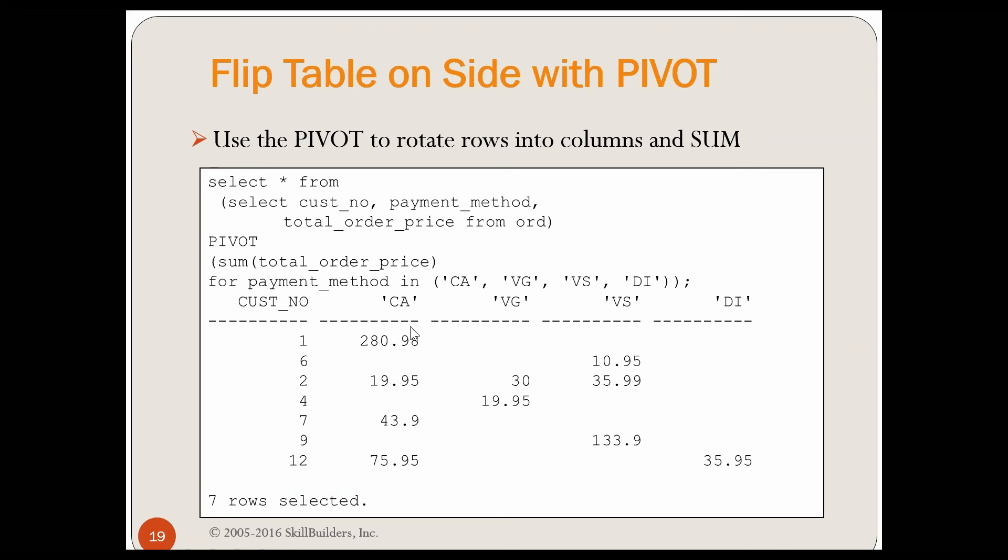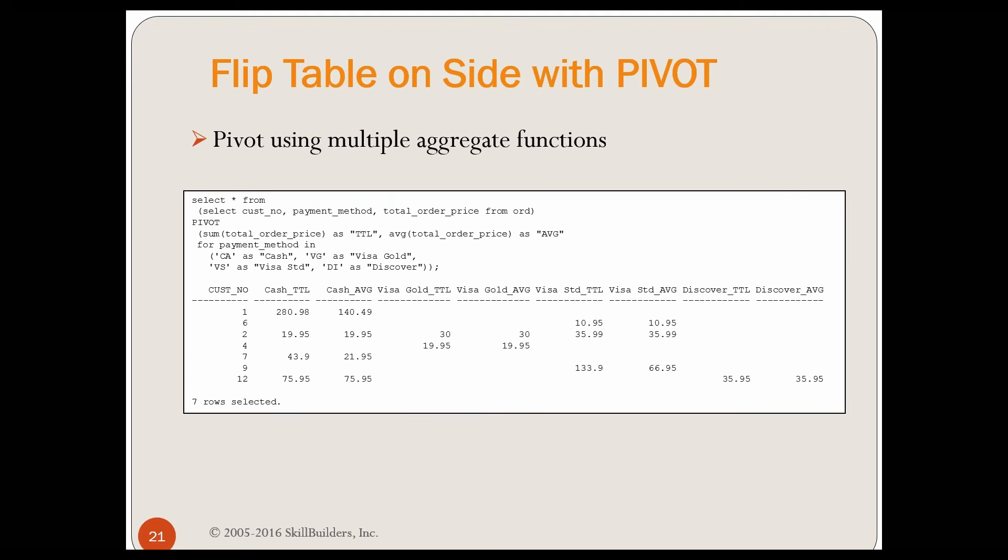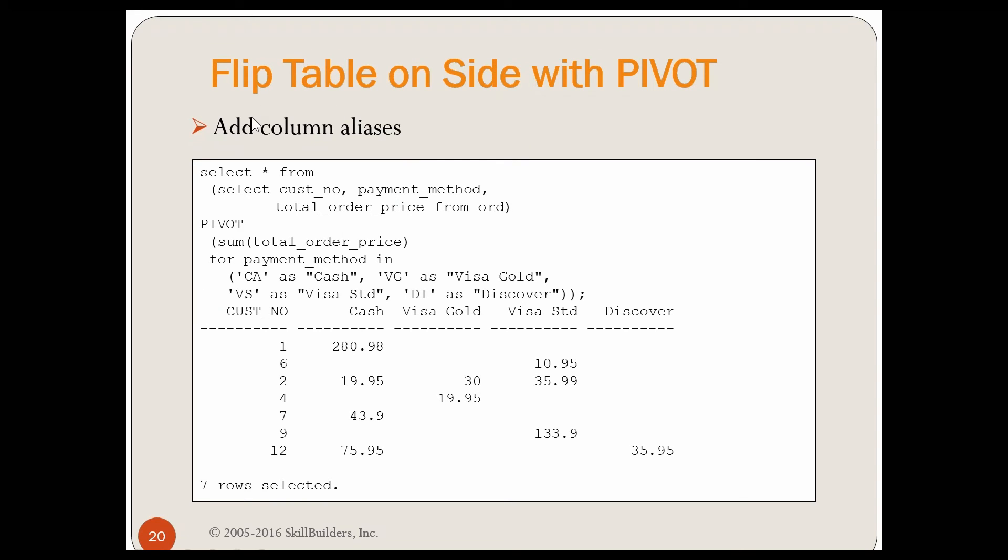Knowing I can do that, this is fine, but notice what it does. For my column aliases, it actually gives me the actual data values with the quotes on them and so on. That's not so great. I'm not happy with that. So therefore, of course, you can do column aliases. I'm adding column aliases with the pivot. CA as cash, VG as Visa Gold. No problem. You can have column aliases. So that's an easy one to resolve.